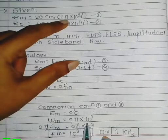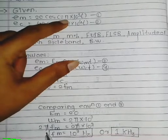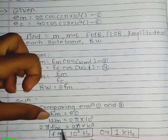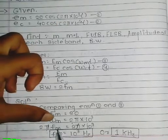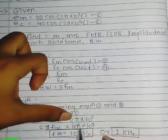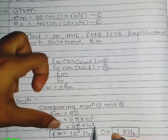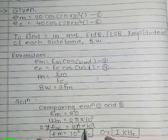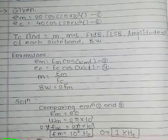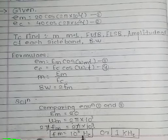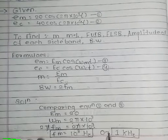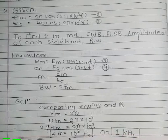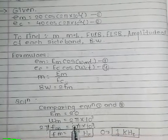Since ωm = 2π·FM, we set 2π·FM = 2π × 10³. Cancelling 2π from both sides, FM = 10³ Hz, which equals 1 kHz.